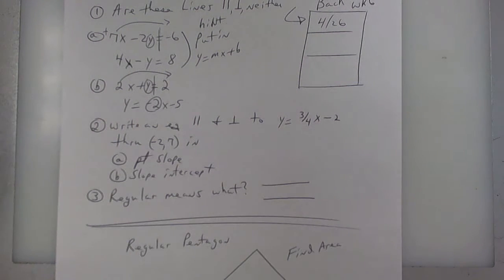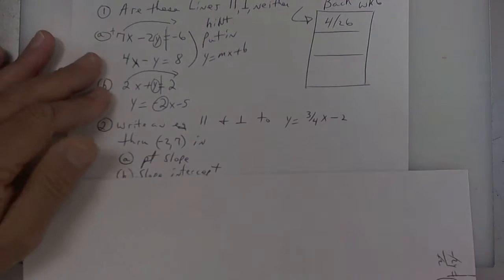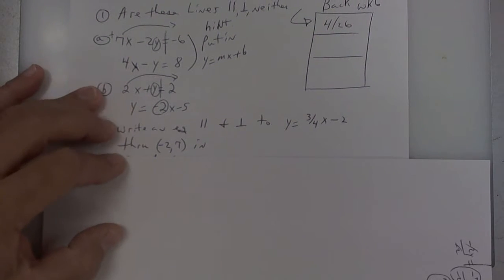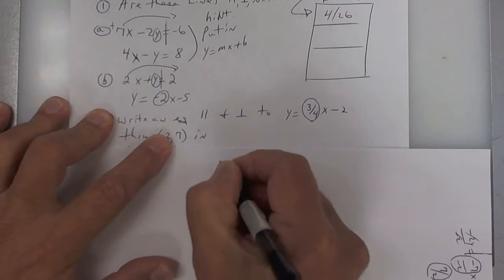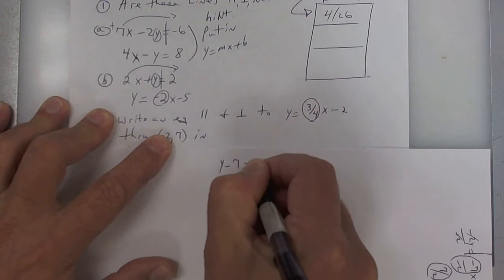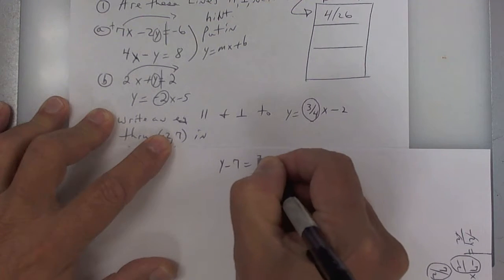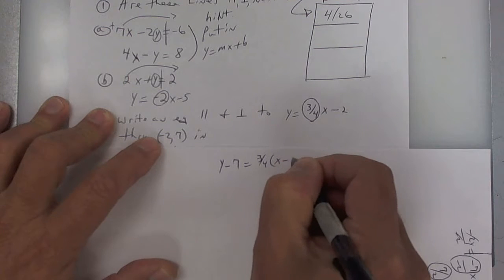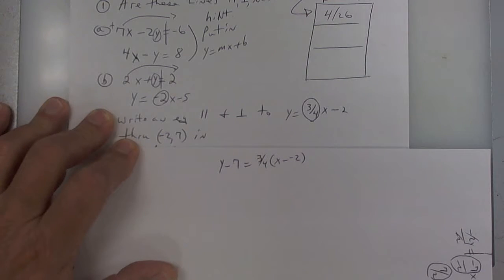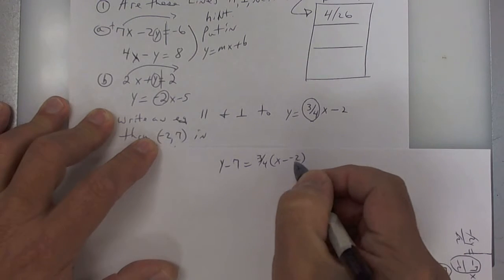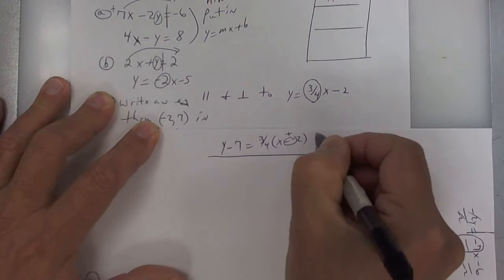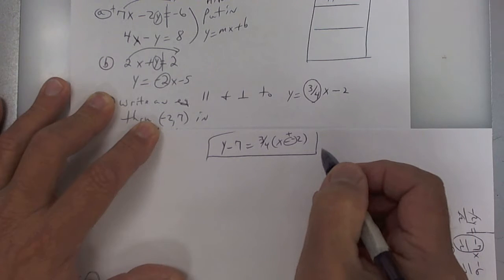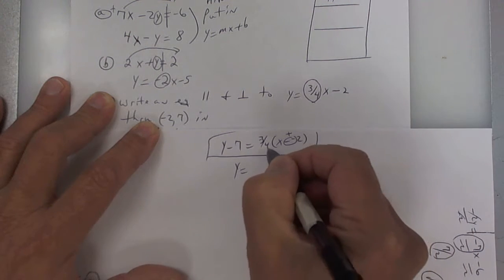It says write an equation that's both parallel and perpendicular to that one — I want point slope and slope intercept form. On this one, you're going to take your slope and write y minus your y, then your slope, then x minus your x. So in that particular case, this is point slope. You technically could change that to a plus. To get it in slope intercept form, you're going to move the 7 to the other side and distribute.